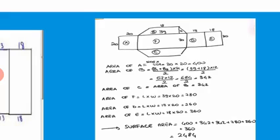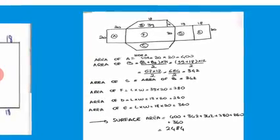Rectangle F has area 39 times 20 equals 780. Rectangle D has area 13 times 20 equals 260. Rectangle E has area 18 times 20 equals 360. The total surface area is 400 plus 342 plus 342 plus 780 plus 260 plus 360, and the sum equals 2484.